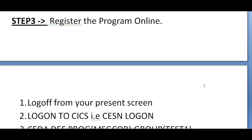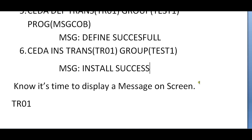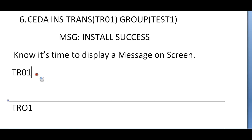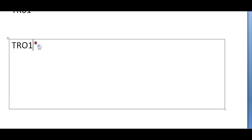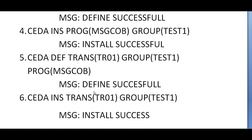Now we have completed all three steps: coding the program, compiling the program, and registering the program in the online table. It's time to display the message on screen. Since we defined the transaction as TR01, go to the CICS screen, type TR01 in the bottom-left corner, and press Enter. The transaction searches the PCT table, which contains the transaction ID and its associated program, and then searches the PPT for the associated load library. Based on that, your message is displayed on the screen.